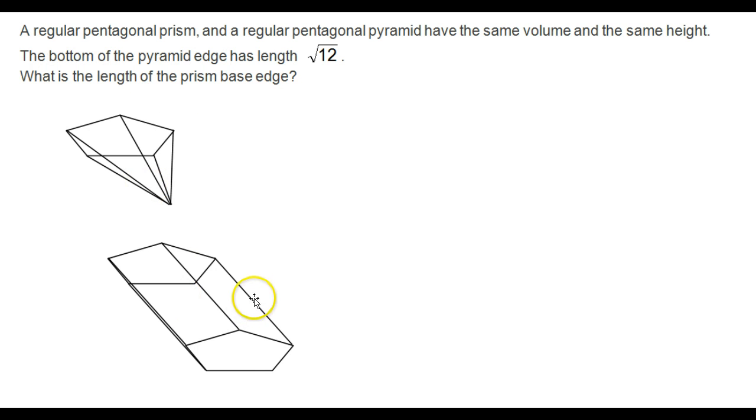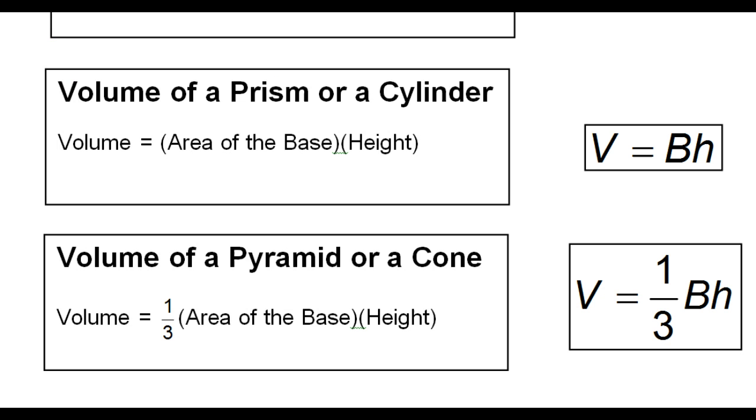Forgive my horrible drawings but we have a pentagonal prism and here's a pentagonal pyramid. The formula for the volume of a prism is area of the base times the height whereas the formula for the volume of a pyramid is one third the area of the base times the height.